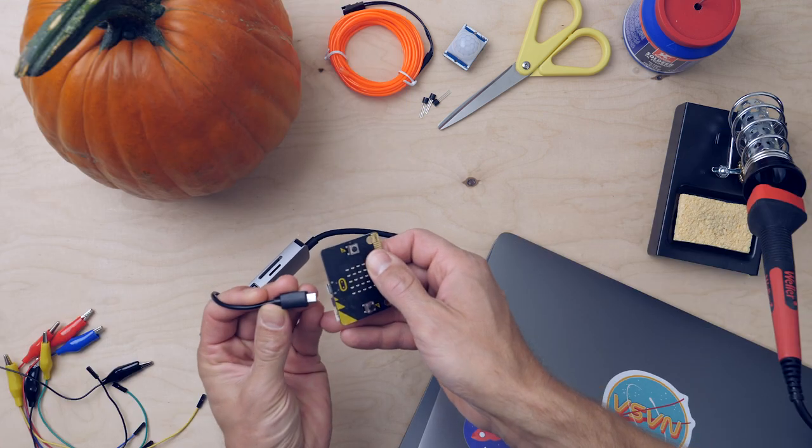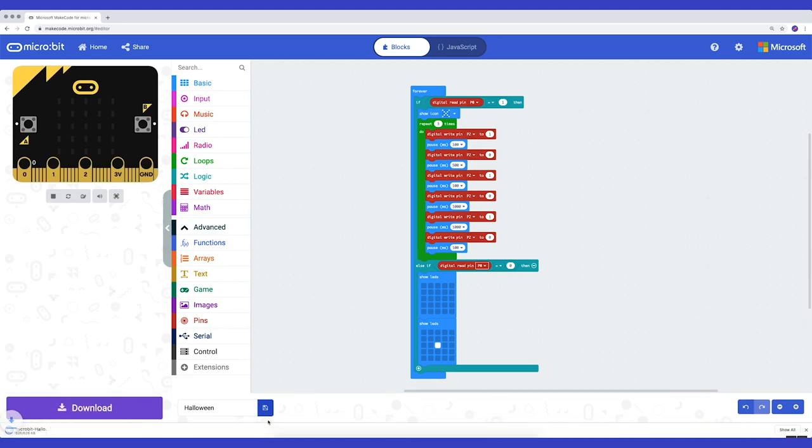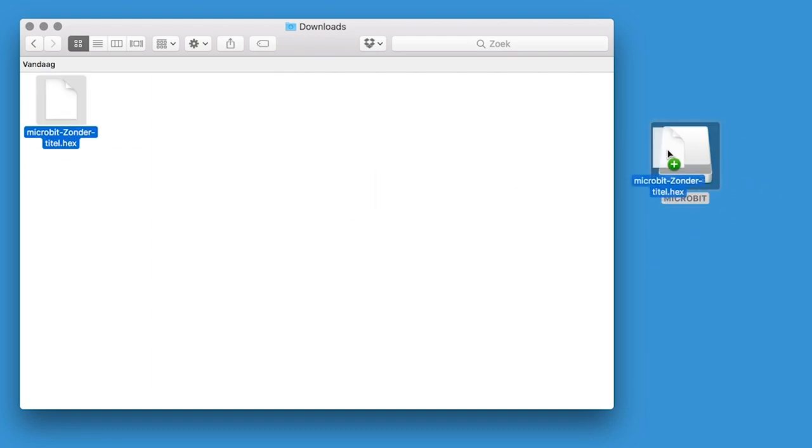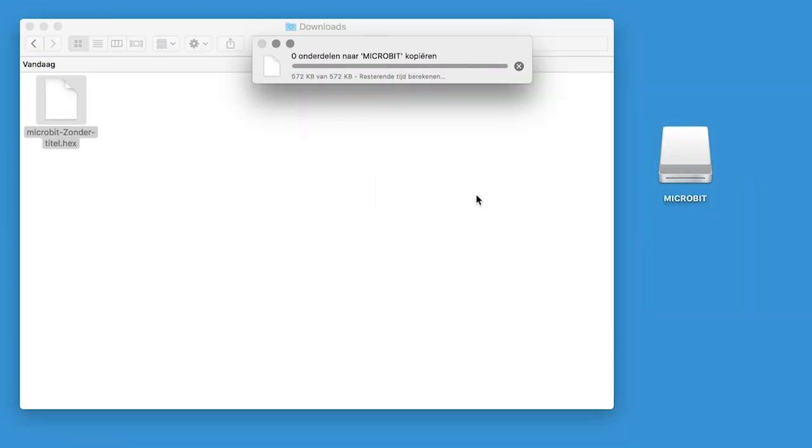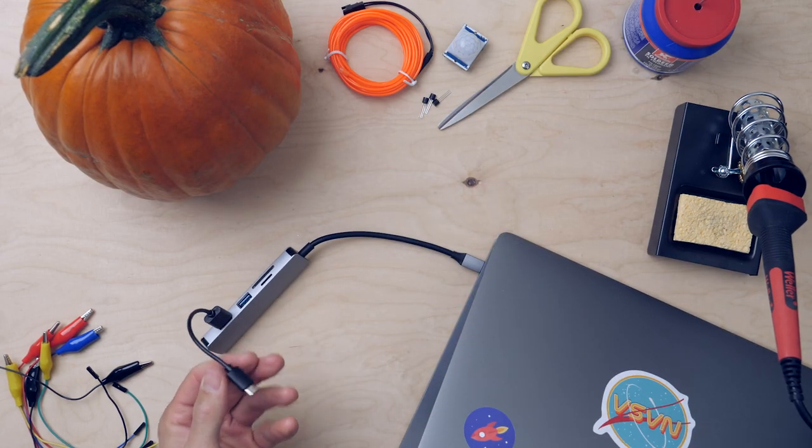Done. Connect your Micro-Bit to your computer, save and download the code and drag the .hex file to your Micro-Bit drive. Once your code has downloaded, you disconnect your Micro-Bit again. Your turn.